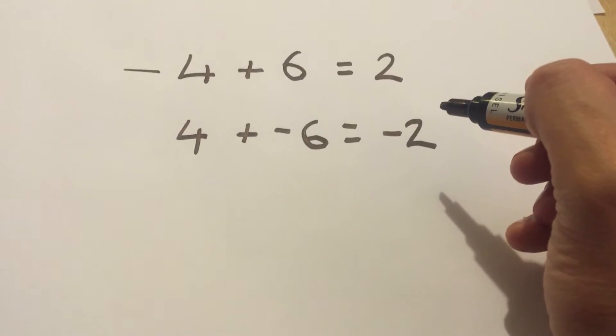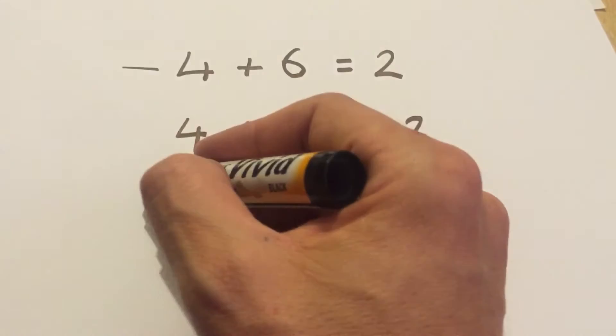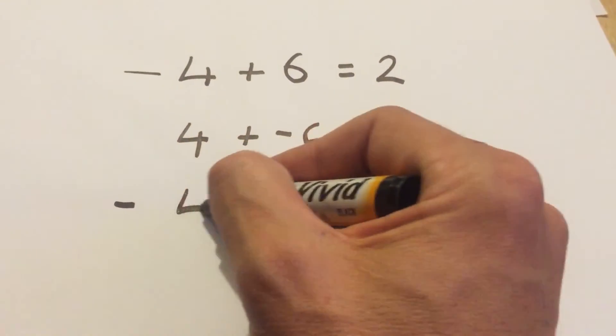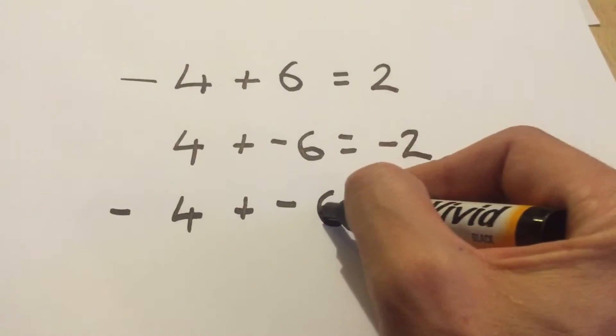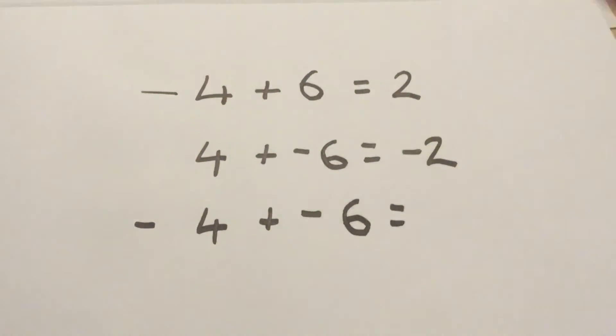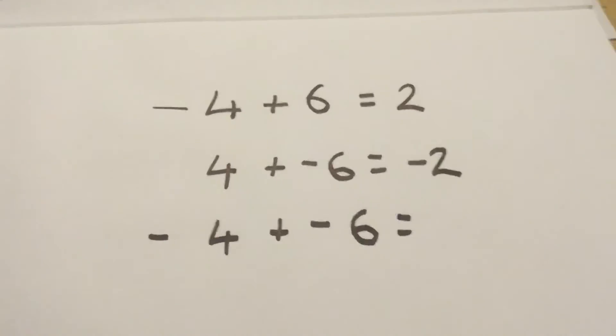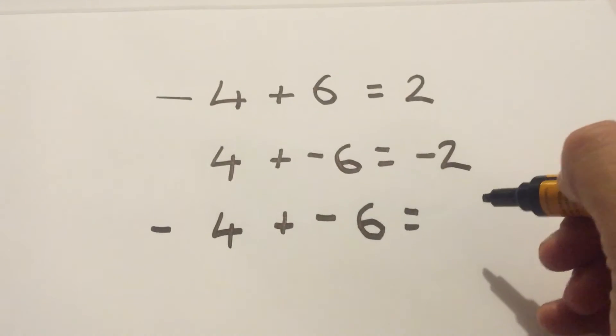Okay, reasonably straightforward. How about if it was this though? Negative 4 plus negative 6. Possibly what you might consider to be the hardest equation out of these ones.